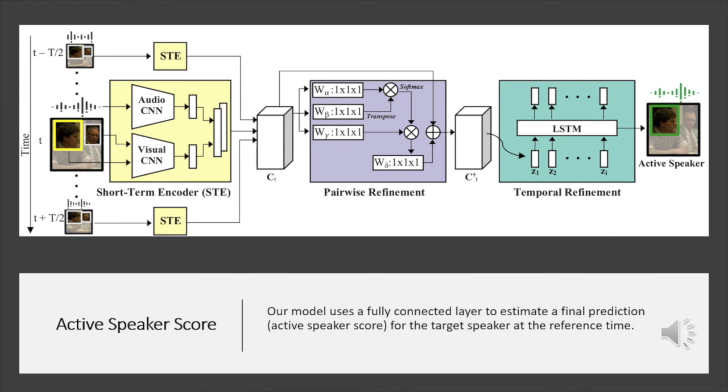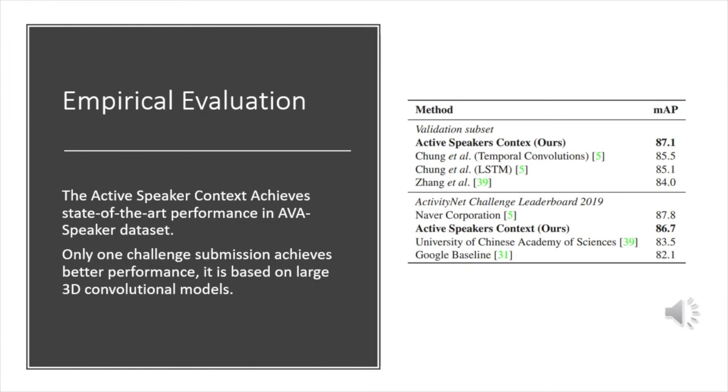At the end of the day, after applying all this process, what we aim, what we are estimating, is an active speaker score. Essentially, it's a number between 0 and 1 that indicates us how likely is a given person, remember back from the active speaker ensemble, the person at the target time and the target person, how likely is this individual to be our active speaker for the sequence. When we perform the empirical evaluation, we realize that the active speaker ensemble produces state-of-the-art results. Specifically, we get about two points above any other published method in the validation set. If we compare against the ActivityNet challenge leaderboard from the past year, we realize we rank second. This is interesting because pretty much every other method in that leaderboard uses 3D convolutions and an ensemble of networks on 3D convolutions. We resort to a single network that uses only 2D convolutions.